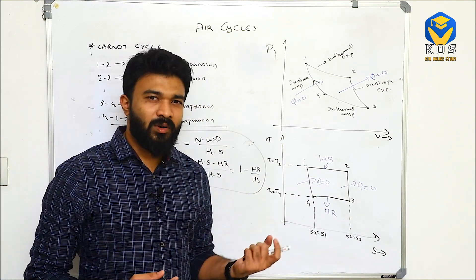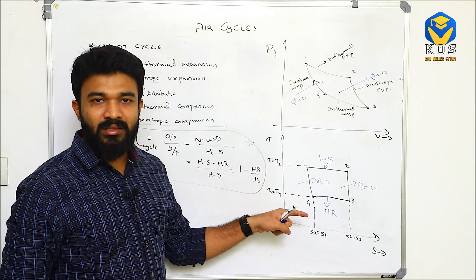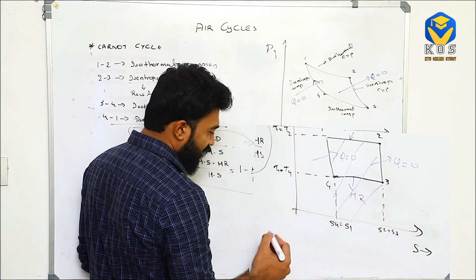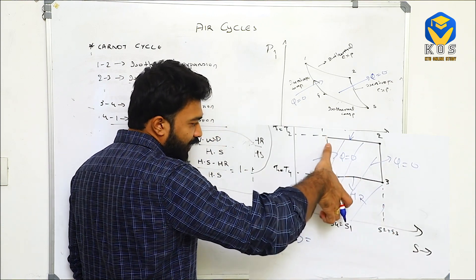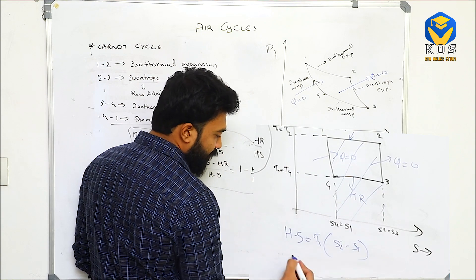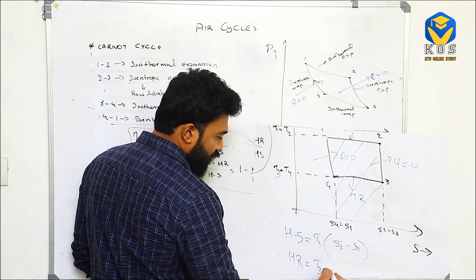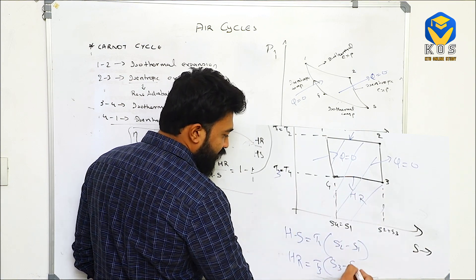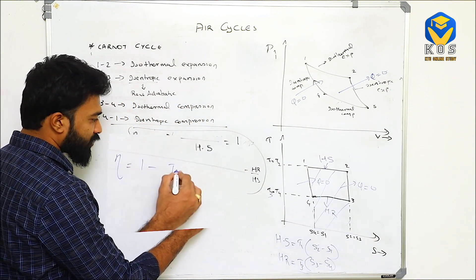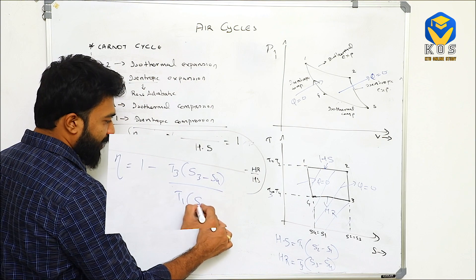The area under the PV diagram gives work done; similarly, the area under the TS diagram gives heat transfer. For process 1 to 2, the entire area represents heat supplied, equal to T1 multiplied by (S2 minus S1). Heat rejected equals T3 multiplied by (S3 minus S4). Therefore, the efficiency of the Carnot cycle is: 1 minus [T3 × (S3 − S4)] divided by [T1 × (S2 − S1)].